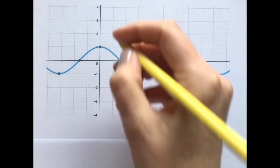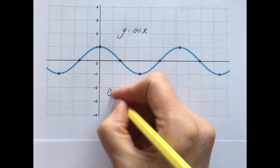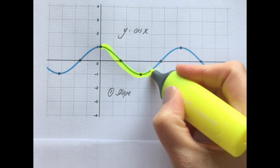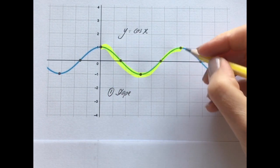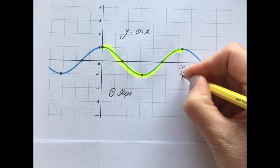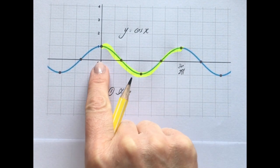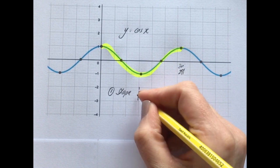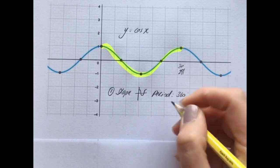Now we're going to move on to the cos x curve. Again, we'll boil it down to three really important points. The first is the shape — this time it's a U shape that is repeated over and over again, between 0 and 360 degrees, or 2 pi in radians. So the period is again 360 degrees or 2 pi.